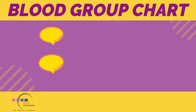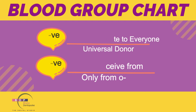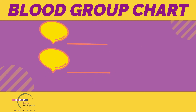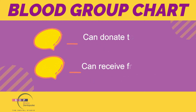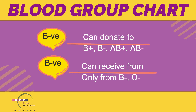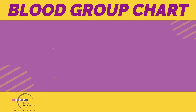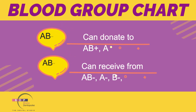O negative is our universal donor — it can give blood to everyone. However, it can only receive from O negative. B negative can give to B positive, B negative, AB positive, and AB negative, and can receive from B negative and O negative. AB negative can give to AB positive and AB negative, and can receive from AB negative, A negative, B negative, and O negative.